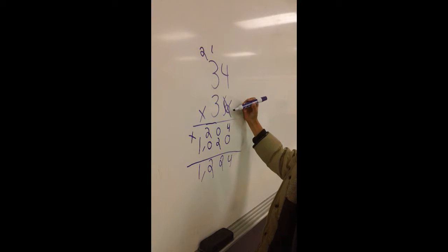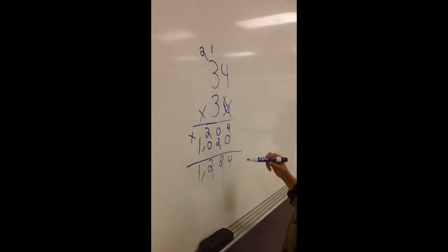First you multiply 6 times 4 equals 24. Put the 4 on the ones and the 2 on top of the 3s. Then you multiply 3 times 3 and then add 2 equals 20.